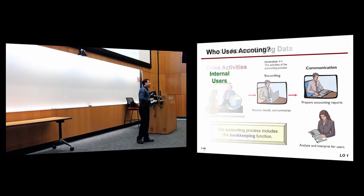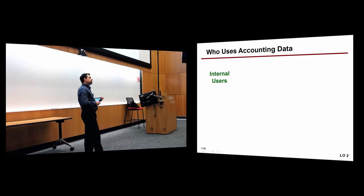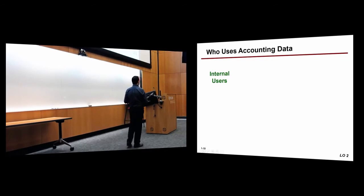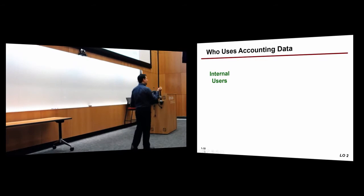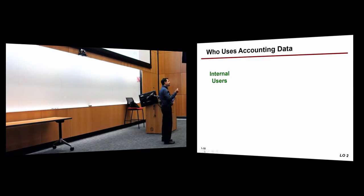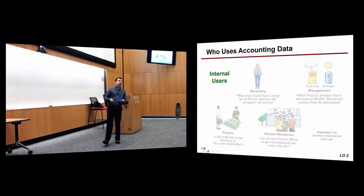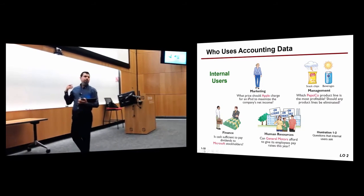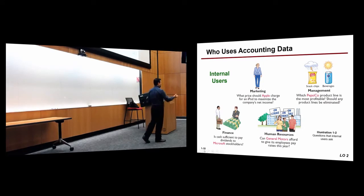So we have different information users. Those are people or entities or organizations that would use that information. We have two types of users. Internal users who are from within the company and external users who are from outside. You can give an example of internal users. Management. Who else? Marketing. Finance. So basically you have people like marketing people, finance, HR, production managers. All these people are interested in this information. They use this information to make better informed decisions.